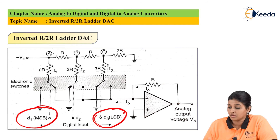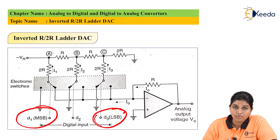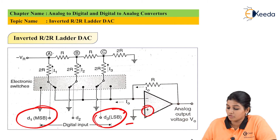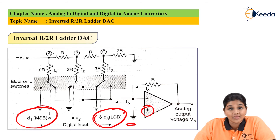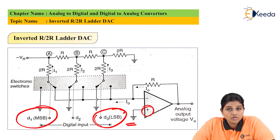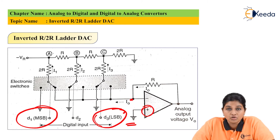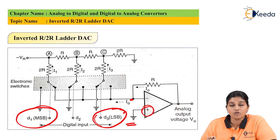According to the virtual ground concept, if one terminal of the op-amp is connected to ground, the other terminal will also be at the same potential. In the diagram, the non-inverting terminal of the op-amp is connected to ground, meaning the voltage at the non-inverting terminal is equal to 0. As per the virtual ground concept, the voltage at the inverting terminal is also equal to 0. So, irrespective of the switch position, the same constant current flows through each resistor.